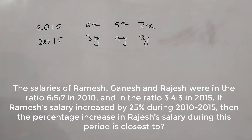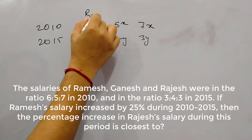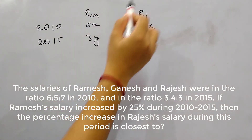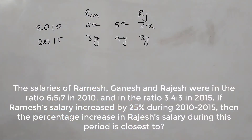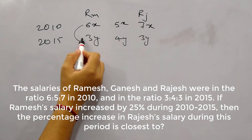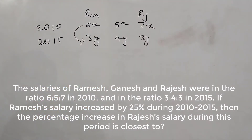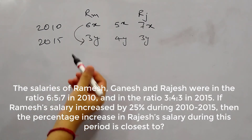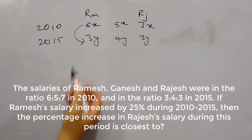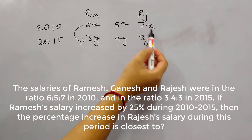If Ramesh's salary increases by 25% during 2010 to 2015, then the percentage increase in Rajesh's salary during this period is closest to what? So this is Ramesh and this is Rajesh. It is given in the question that the change in Ramesh's salary is 25%, and we need to find out what is the percentage change in Rajesh's salary.